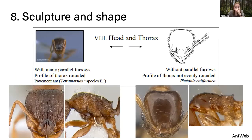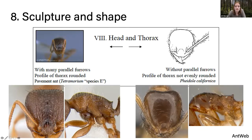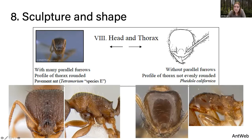Finally, we've got structure and shape. Tetramorium — labeled in this key as species E, Tetramorium immigrans — has lots of beautiful sculpturing, hairs all over, little furrows, and the thorax has a rounded profile with little spines. The alternative is Pheidole, whose head is very smooth, glossy, and shiny without any of the texture of Tetramorium. There's also a big groove called the metanotal groove on the thorax. Because of this groove and the smooth head, we can tell it's Pheidole californica.